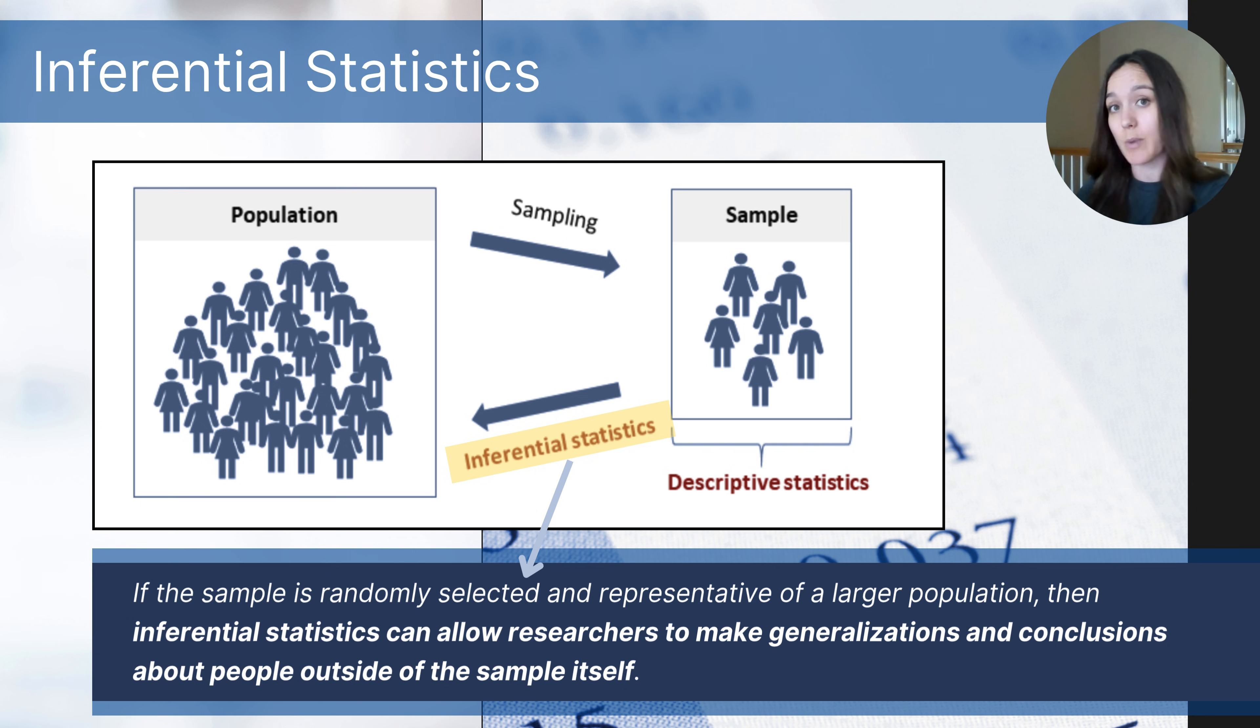And if 50% of those students in the sample that was random and representative, if 50% of those students passed the exam, I can make an inference that 50% of the population of students were able to pass the exam. And that is inferential statistics.